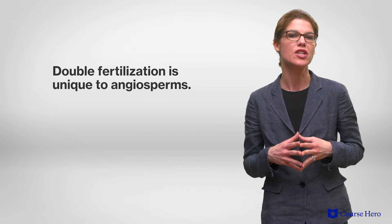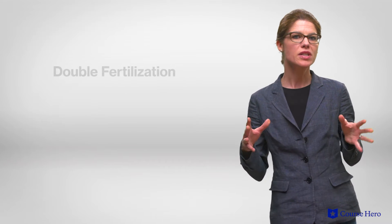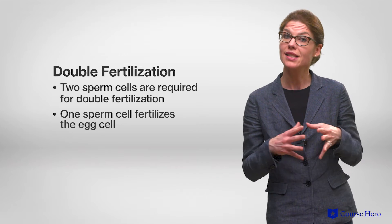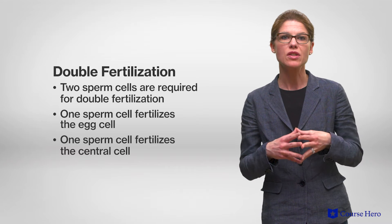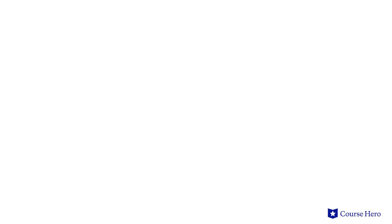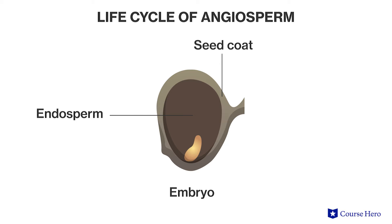As mentioned earlier, double fertilization is unique to angiosperms. This process involves two sperm cells — one that fertilizes the egg cell and one that fertilizes the central cell, which consists of two nuclei. Pollination of the egg forms a zygote, which becomes the plant's seed. The product of the second fertilization is a triploid cell that becomes the endosperm. This is a protective coating around an angiosperm seed, and an example would be the fleshy part of a fruit, such as apples or pears.